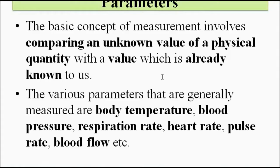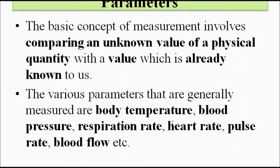The basic parameters generally used for diagnostic and clinical purposes are body temperature, blood pressure, respiration rate, heart rate, pulse rate, and blood flow rate — to name a few. These basic body parameters give us a lot of information about whether the body is functioning normally or not. For example, a high body temperature can tell us whether we have a fever, and blood pressure gives us information about how our body is working.